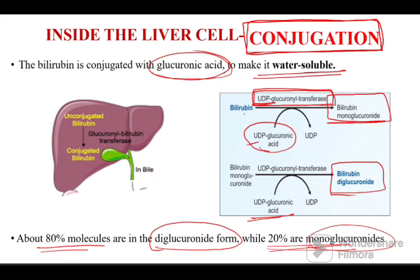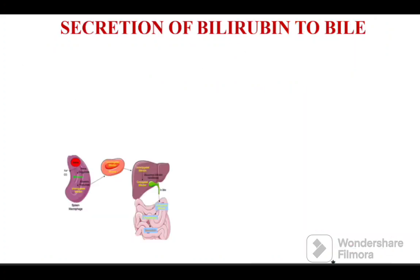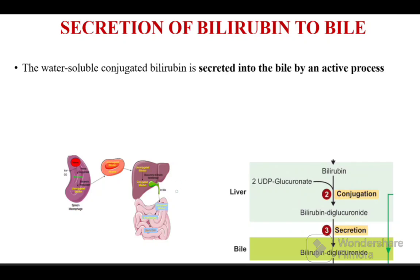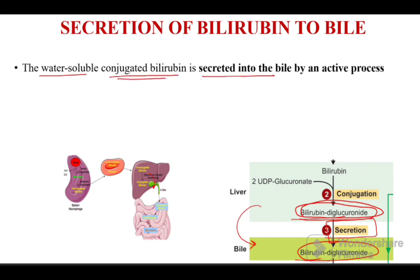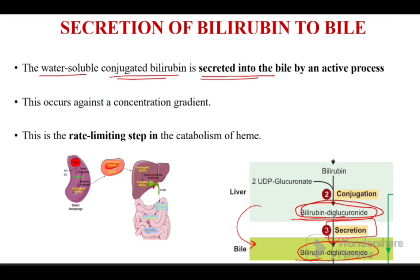After conjugation, the bilirubin diglucuronide form is secreted into the gallbladder. The transfer of bilirubin diglucuronide from the liver to the bile is called secretion. The water soluble conjugated bilirubin is secreted into the bile by an active process, occurring against a concentration gradient. This is the rate-limiting step in the entire catabolism of heme, controlling the actual hemoglobin degradation.